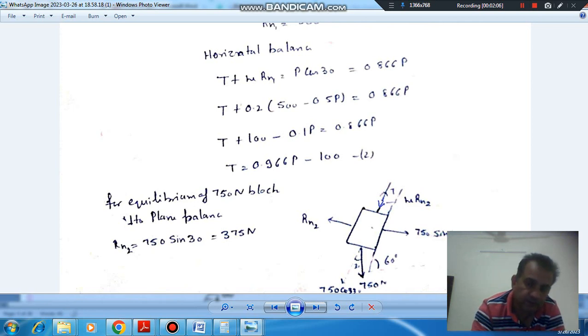Now, considering the equilibrium of the inclined block, and its weight is acting in downward direction. This angle is 60 degree. So this angle will be 30.